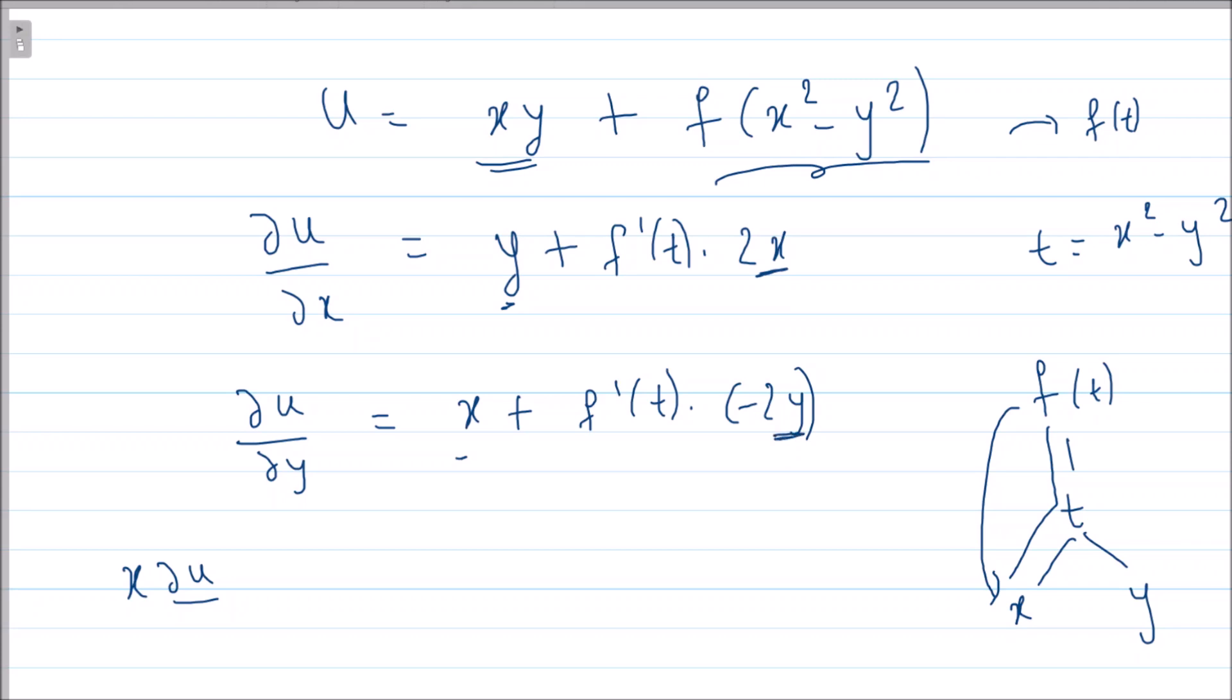So this is not helping me. What I will do is I will multiply by the opposite variable. So y·∂u/∂x equals y² + 2xy·f'(t), and the second equation when I multiply by x, I get x·∂u/∂y equals x² - 2xy·f'(t).